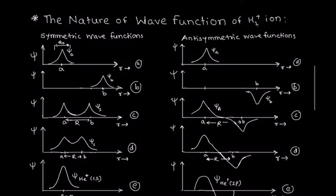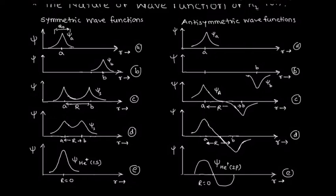As R equals zero and the two protons fuse together forming a single nucleus, the resulting wave function for the anti-symmetric case is equivalent to the wave function of the helium plus ion in the 2p state. The 2p state is an excited state for the helium atom, and with one electron in the 2p state the system achieves higher energy. Due to this excess higher energy, the anti-symmetric wave function forms an unstable system.